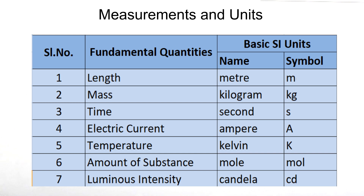You may not be familiar with amount of substance and luminous intensity. Amount of substance is a unit used in chemistry to represent the number of units of matter. Luminous intensity refers to the amount of light that a point source radiates in a given direction.